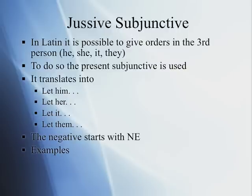To do that, you use the present subjunctive as a main verb to give an order. It translates as 'let him,' 'let her,' 'let it,' or 'let them.' When the Beatles say 'let it be,' they use the jussive subjunctive, third person singular neuter. The negative of this is formed with 'ne' plus the present subjunctive.